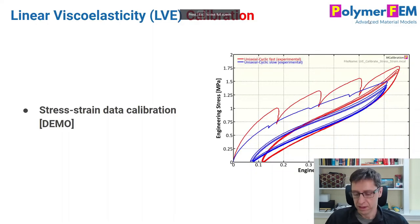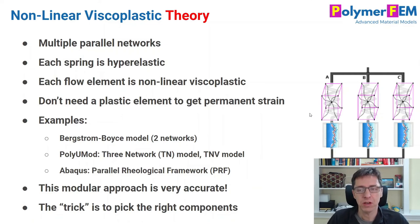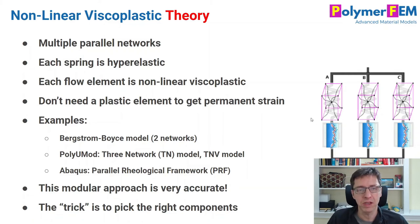So what is non-linear viscoelasticity? It's an extension of linear viscoelasticity, often represented as many parallel networks in a rheological model. Each network has a hyperelastic spring and a non-linear flow element (dashpot). Examples include the Bergstrom-Boyce model and more modern multi-network representations with higher numbers of elements. Selecting the appropriate type of network elements is key to good predictions.